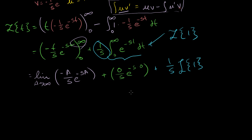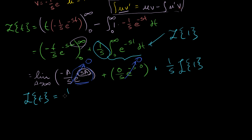As a approaches infinity, you might think this becomes a very large negative number, but e to the minus infinity goes to 0 much faster than a goes to infinity — the exponential overpowers the linear term, so the whole limit goes to 0. Likewise, the evaluation at 0 gives 0 over s times 1, which is also 0. So all the boundary terms disappear, and we're left with the Laplace transform of t equals 1 over s times the Laplace transform of 1.